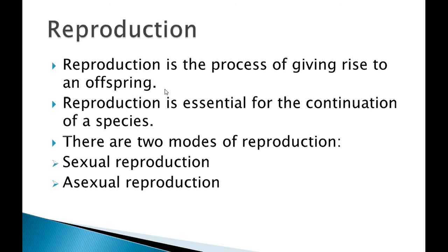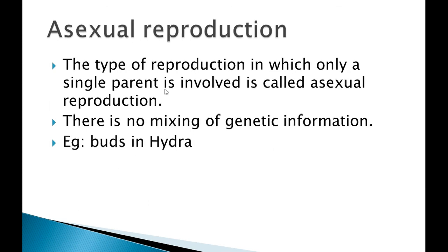So in this we will see we have two modes of reproduction: that is sexual reproduction and asexual reproduction. What is asexual reproduction? Asexual reproduction means that where only one parent is involved — either mother or father. So where there is a single parent, new daughter cells are formed. That is known as asexual reproduction.